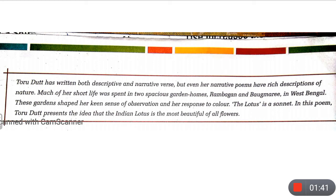A sonnet is a poem that has fourteen lines. The upper eight lines form a group called the octet, and the lower six lines form a sextet. Together, the octet and sextet make a sonnet.